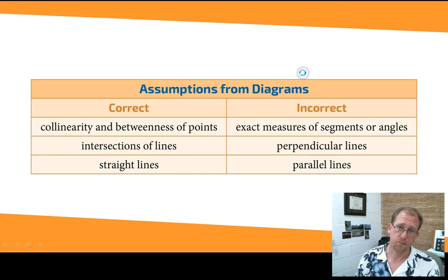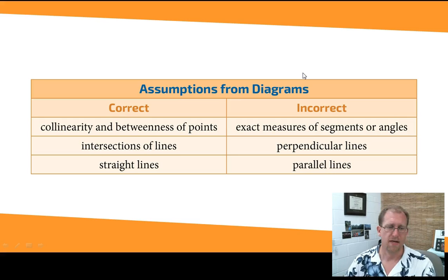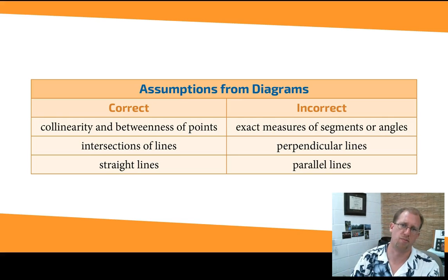When we have a drawing, we can assume various things. We can correctly assume collinearity and betweenness of points. So if points are between other points in a drawing, then we say those points belong there. We can correctly assume that the intersections of lines are properly represented and that the lines are straight. It's not necessarily accurate on a drawing to take a protractor and measure what you've drawn because it's not that accurate.